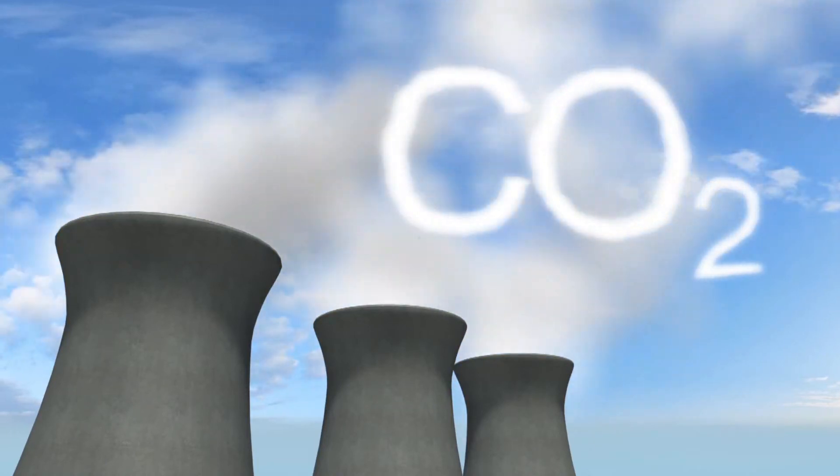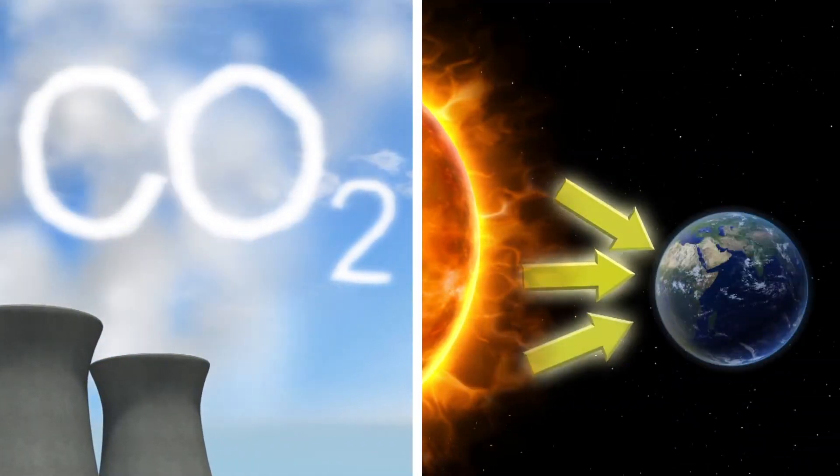Geoengineering has two approaches to cool the planet: carbon dioxide removal and solar radiation management.